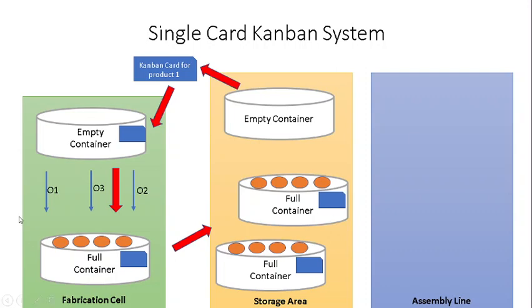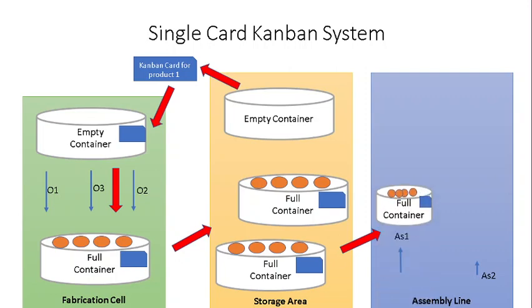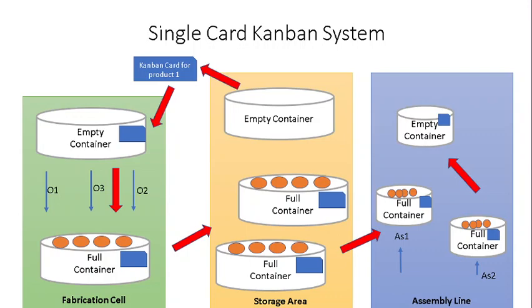As you can see, the fabrication cells have populated and filled some containers. Those containers are waiting in the storage area for the assembly line to pick them up and use them. The assembly line can be split into two, three, or more lines according to production needs. Each one picks one full container and uses the component parts to produce the final product. As soon as one container turns empty, it is passed back to the storage area to be filled again by the fabrication cell. This is a cycling process that continuously operates throughout the day and throughout the operation cycle.